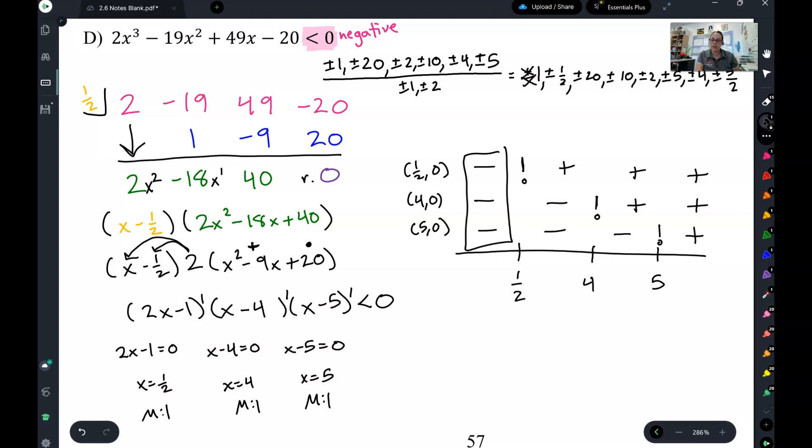And now I look down my columns. Three negatives makes a negative. Two negatives and a positive makes a positive. One negative and two positives makes a negative. And three positives makes a positive.